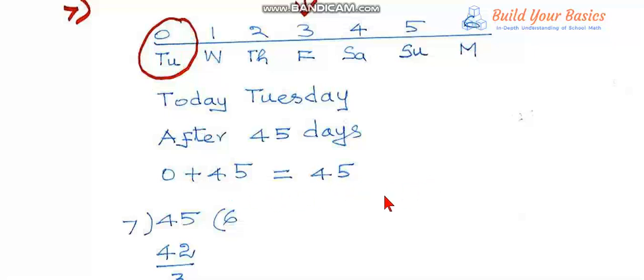As I told you earlier, this is a problem concerning modulo 7, so divide 45 by 7. It goes 6 times, remainder is 3.